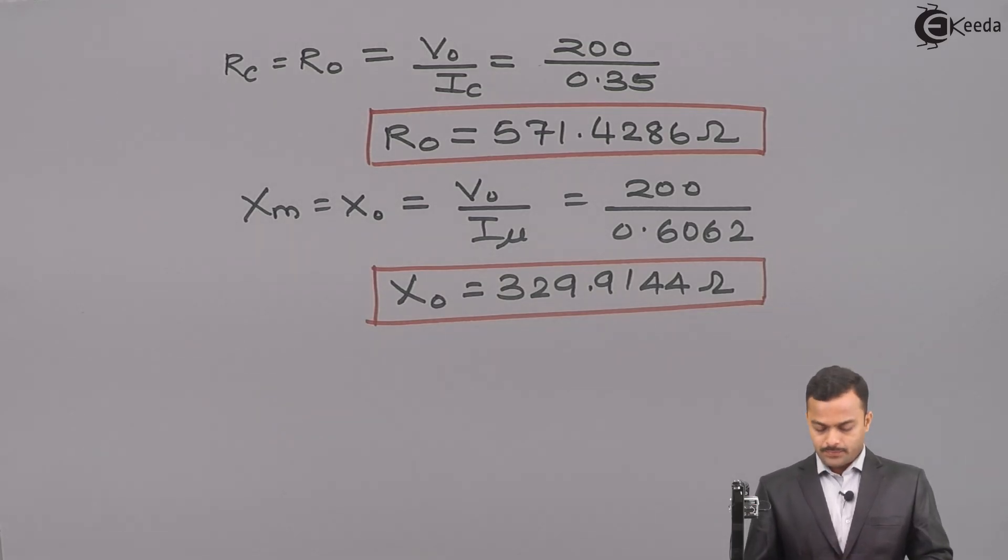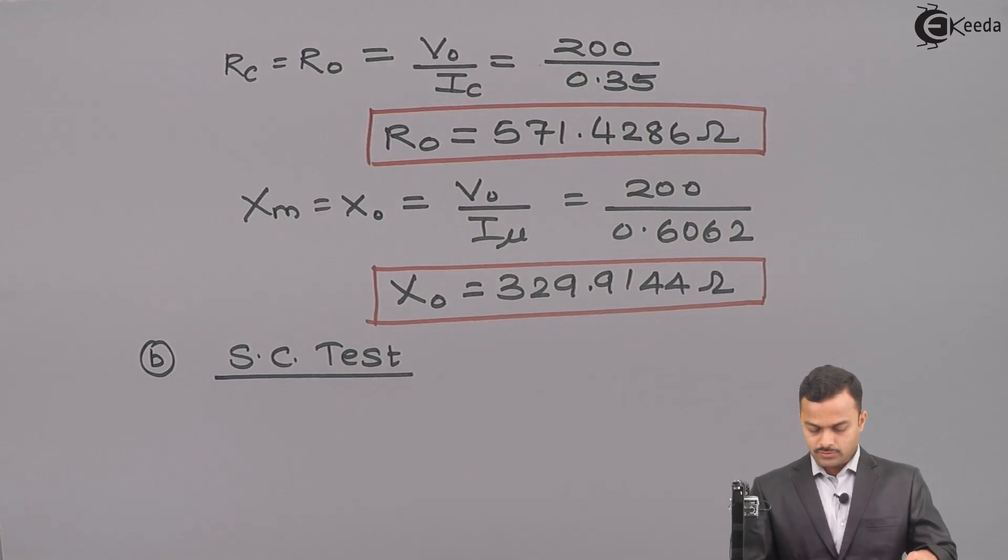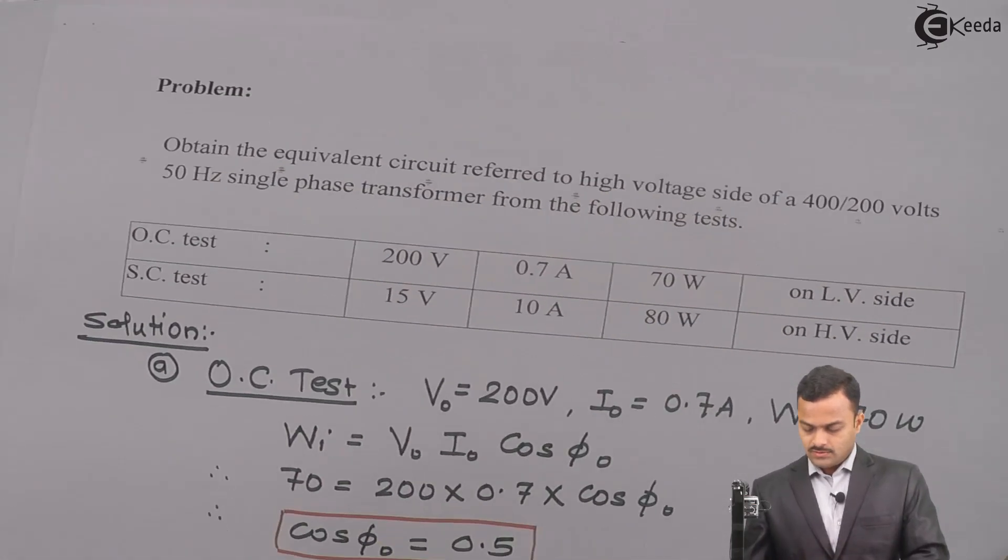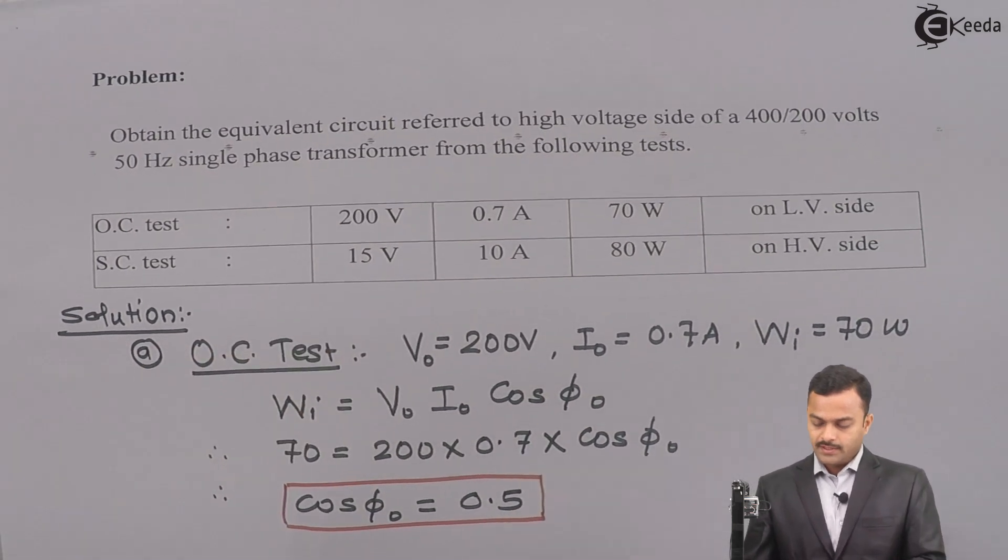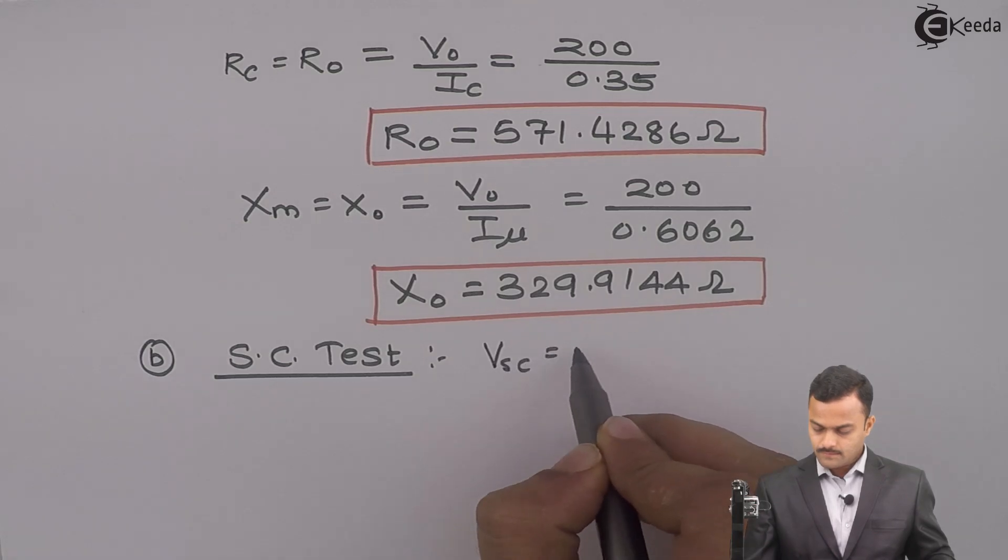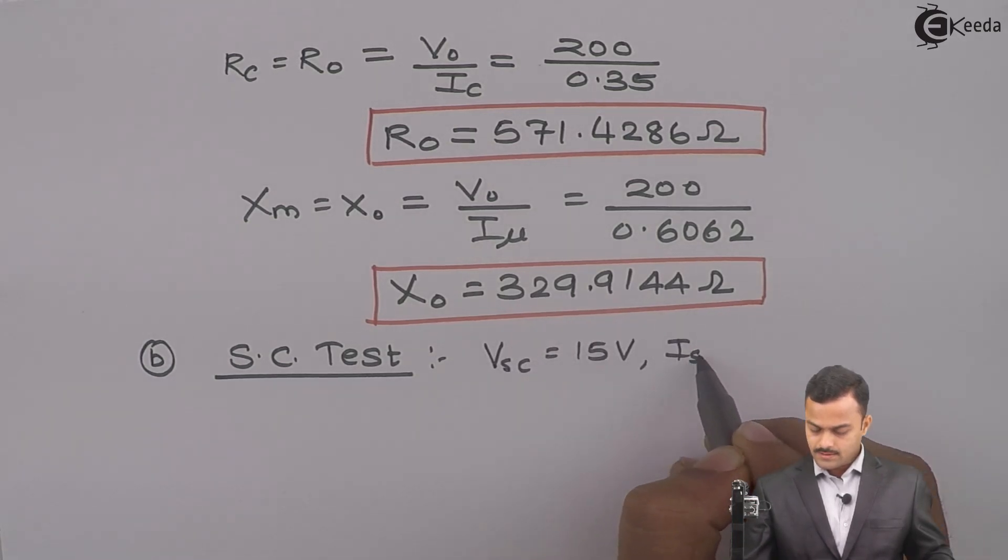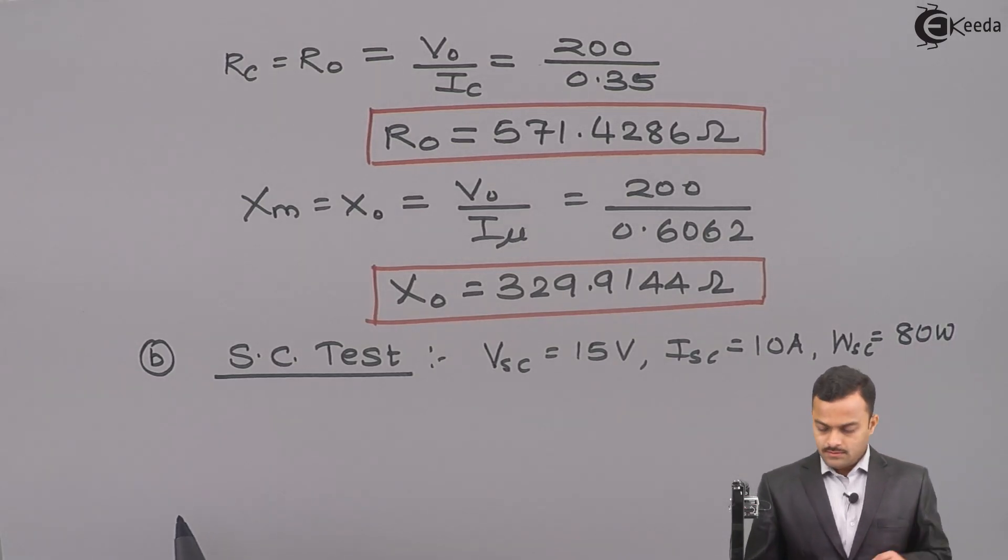Let us see what we can obtain from short circuit test. I will go back to the problem once again. From here, let us list out the things. 15 volt, I can consider VSC. Current ISC is given as 10 ampere and WSC is the power 80 watt.